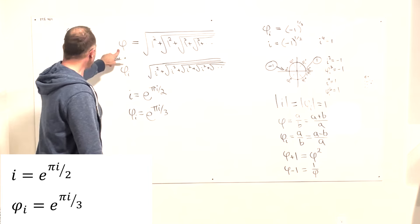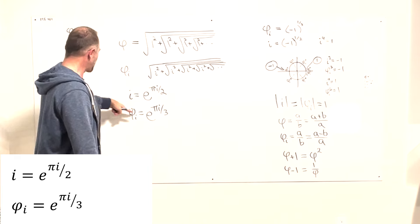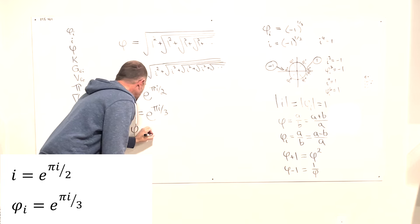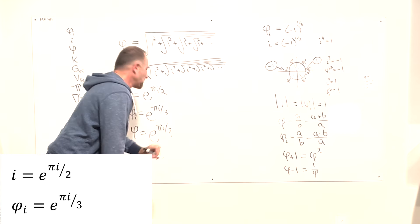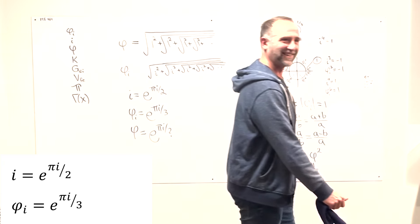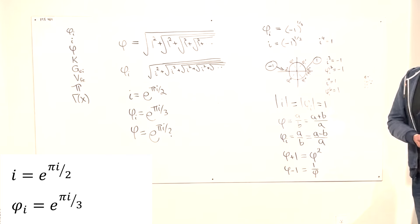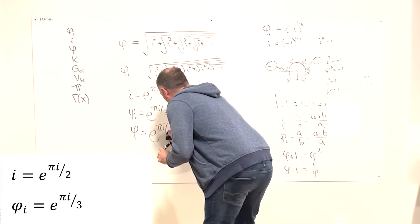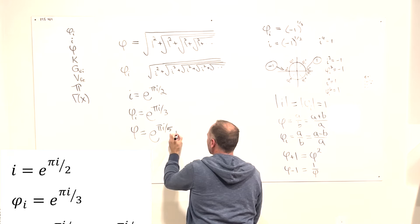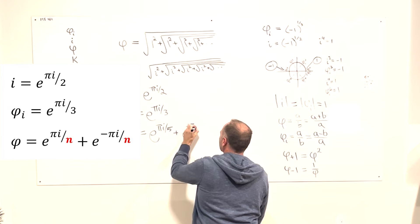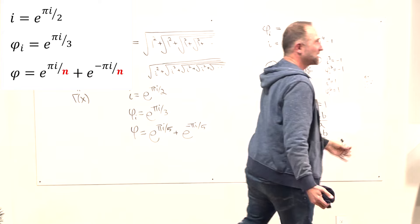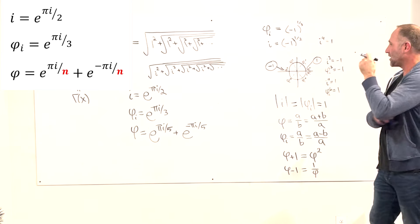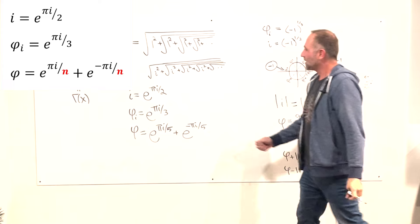You might ask: does the golden ratio have a rotational equivalent? Can I write it as e to the π·i over something? It turns out the answer is no on its own, but the golden ratio equals e to the π·i over 5 plus e to the minus π·i over 5. That's a rotational marriage between all three parameters.